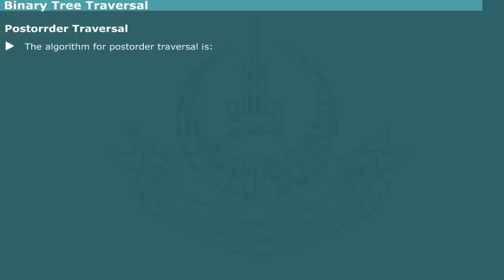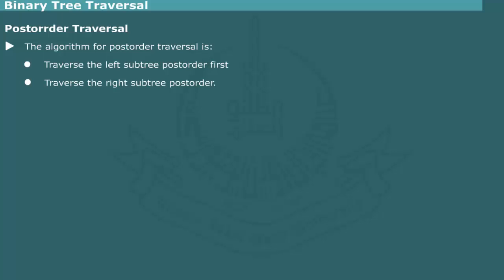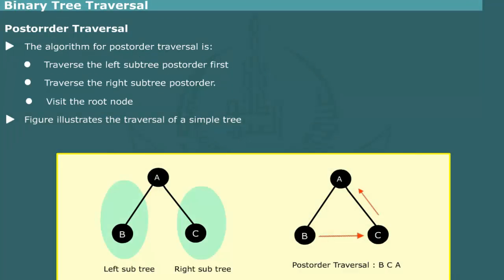Post-order traversal. The algorithm for post-order traversal is: traverse the left subtree post-order first, traverse the right subtree post-order, then visit the root node. The figure illustrates the traversal of a simple tree consisting of three nodes A, B, and C. First the left subtree B is visited, next the right subtree C is visited, and lastly the root node A is visited. Thus, post-order traversal is B, C, A.